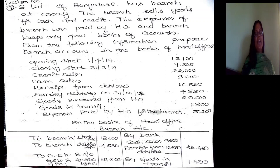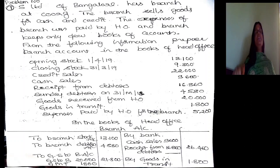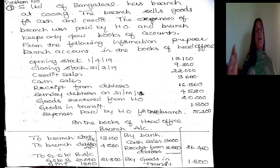Next is cash sales and credit sales. Credit sales do not directly appear in the branch account, but they create an impact on the branch closing debtors. For cash sales, whenever there is a cash sale, it should be remitted by the branch to the head office. The journal entry is: Bank Account Dr. to Branch Account — cash sales 9,600. For receipt from debtors, the amount received from debtors is also recorded and remitted.